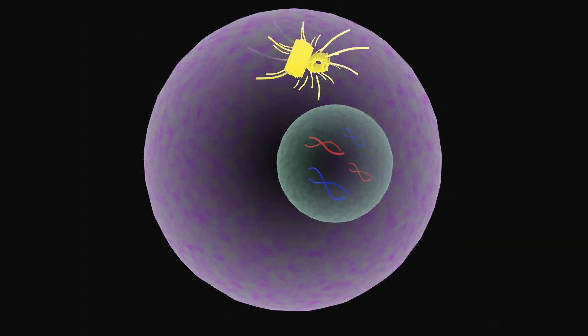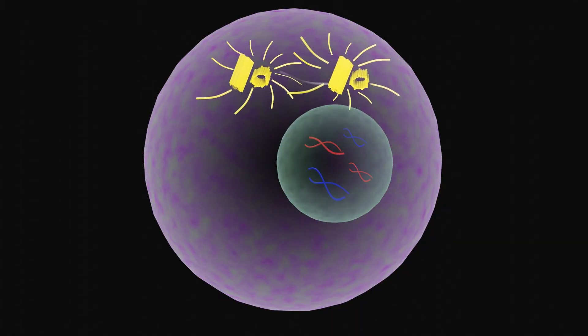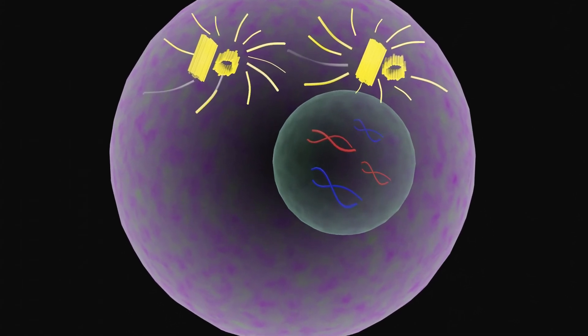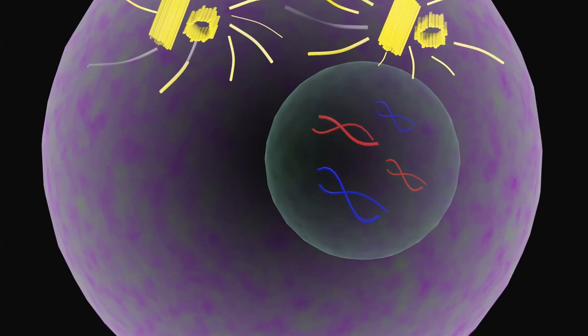The mitotic spindle begins to form. The spindle grows between the centrosomes as they move apart. The nuclear envelope starts disintegrating.